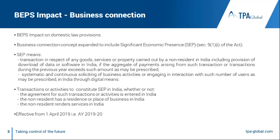Let's begin with one of the most significant changes that will impact non-residents contracting with India: the introduction of the concept of significant economic presence in our domestic tax laws. Over the last couple of years, the government has enacted several provisions in line with the BEPS recommendations. This change seeks to implement the recommendations of Action Plan 1, which relates to the digital economy. Traditionally, under tax treaties, business profits of an enterprise are taxed in the host country only if it has a PE there. The traditional PE rules bank heavily on physical nexus or physical presence in the host country. But with the growth of the digital economy, there has been an advent of new businesses and new ways of doing existing businesses.